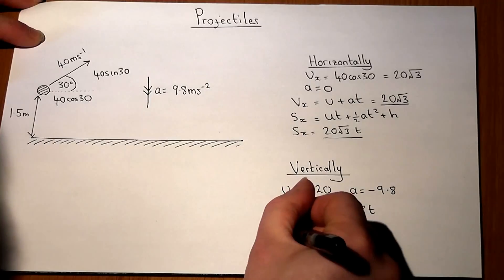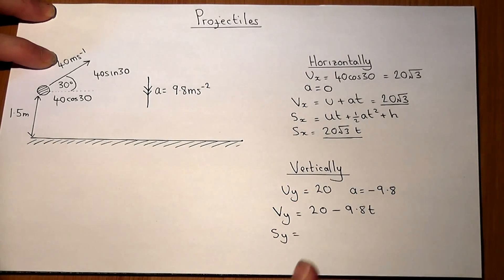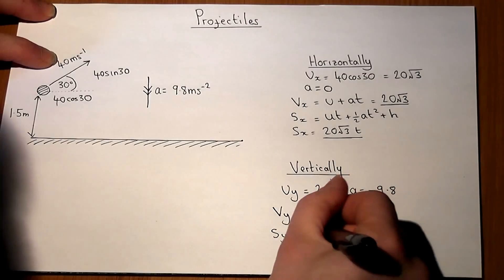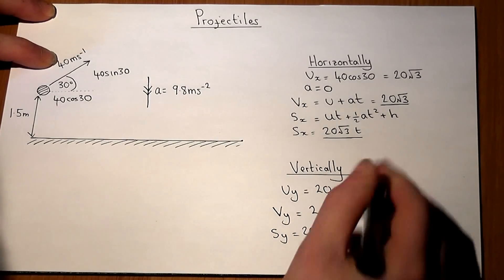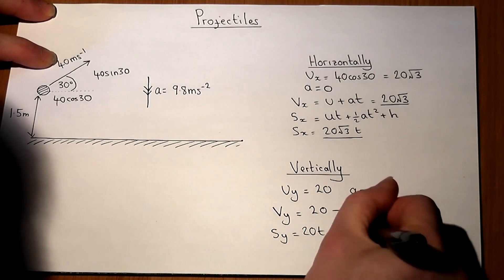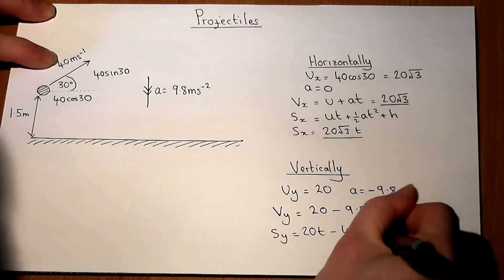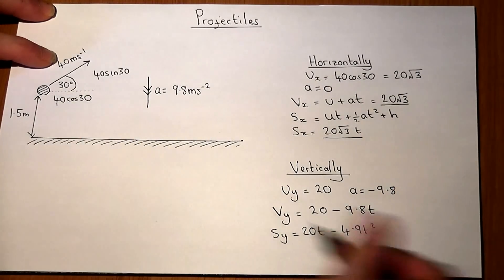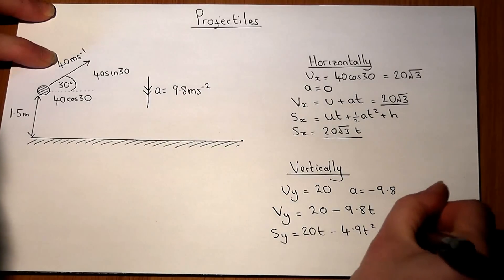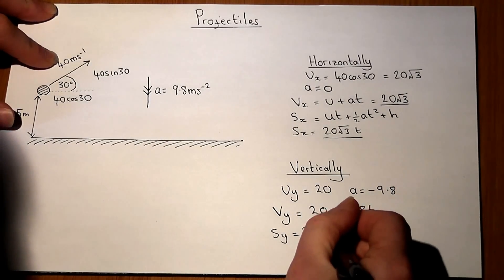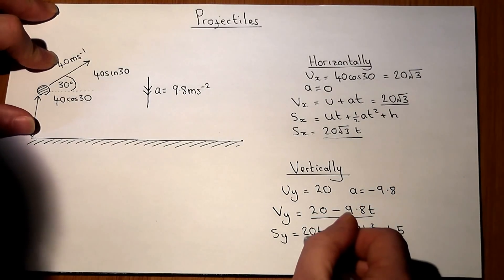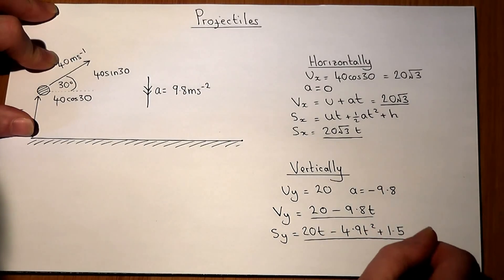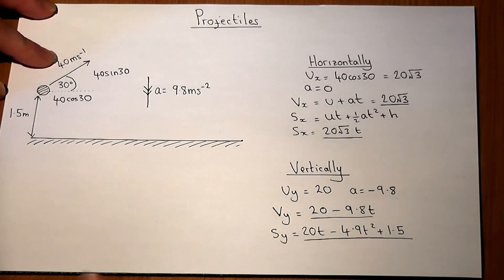And finally the position in the y direction will equal ut which is 20t, then a half a, half of a is minus 4.9t squared, and it's got an initial position so we can add on that 1.5. So there's our expression for the vertical velocity and there's the expression for the vertical position. And it is these four equations which we use to solve problems, which we'll now look at.